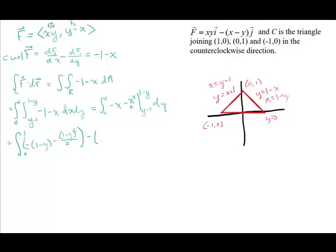Let's plug in our limits. So we're going to have -(1 - y) - (1 - y)²/2. And then, again, once we simplify this, we'll still have to do our integral with respect to y. But it's going to be worth our time to simplify this first.